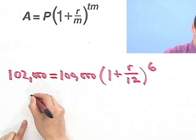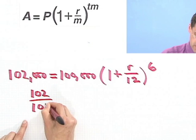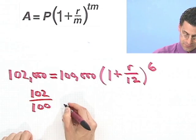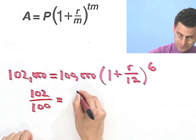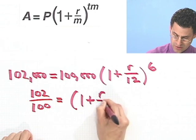And I would just be left with 102 divided by 100, if I cancel all those three zeros. And that would equal 1 plus R over 12, all to the sixth.